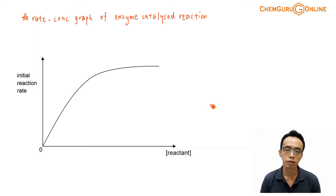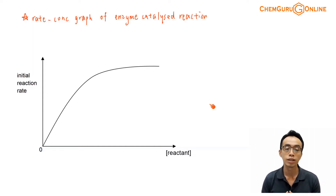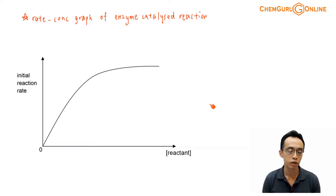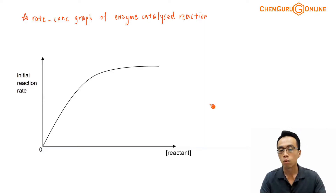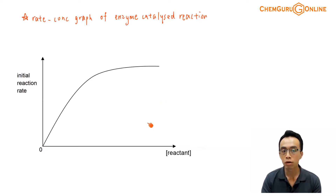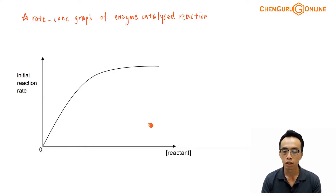Hi everyone, this is Maverick Qua, the chemistry guru. Now for this week, we want to discuss the rate concentration graph of an enzyme catalyzed reaction. So let's take a look at this graph here. What we have is a very typical rate concentration graph for an enzyme catalyzed reaction.